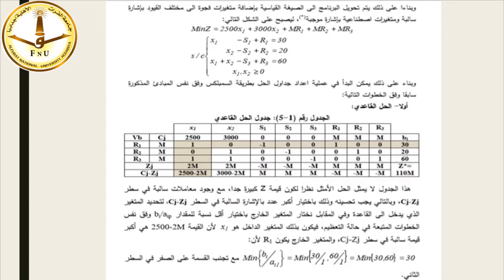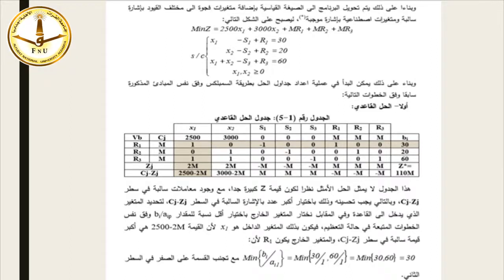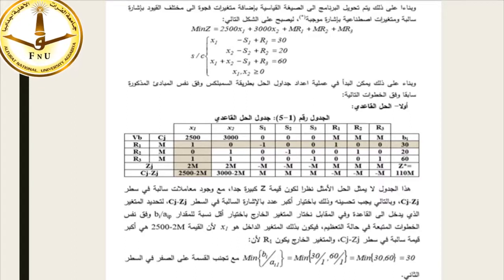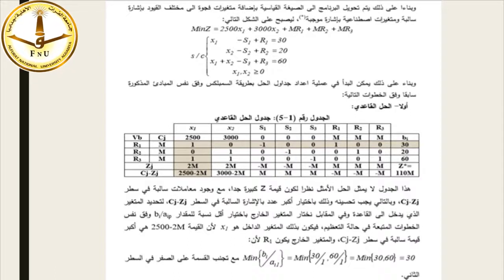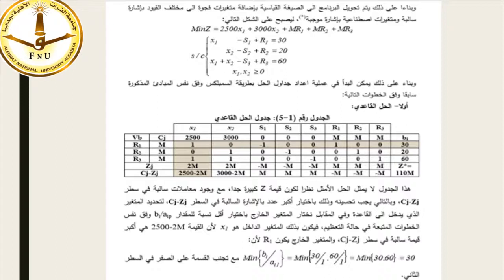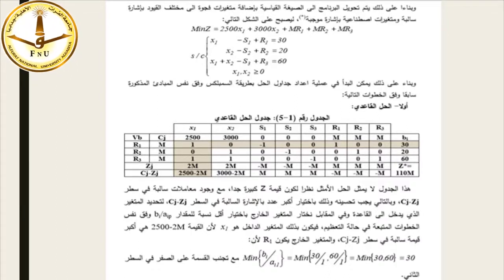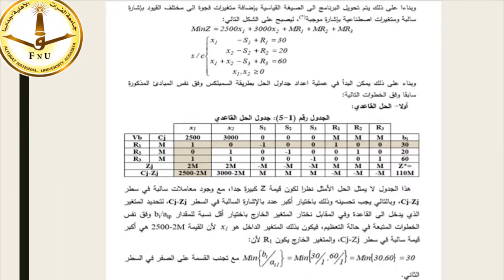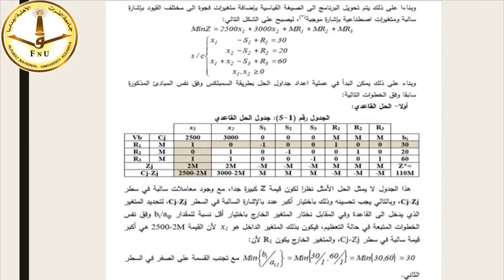وبناءً على ذلك يتم تحويل البرنامج إلى الصيغة القياسية بإضافة متغيرات فجوة بإشارة سالبة ومتغيرات اصطناعية بإشارة موجبة، فيصبح: نُدني Z = 2500X1 + 3000X2 + MR1 + MR2 + MR3، مع القيود: X1-S1+R1=30، X2-S2+R2=20، X1+X2-S3+R3=60، وX1,X2≥0.